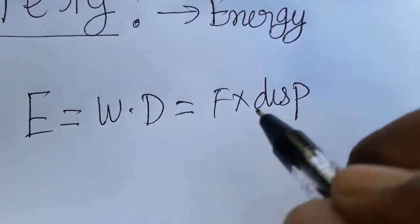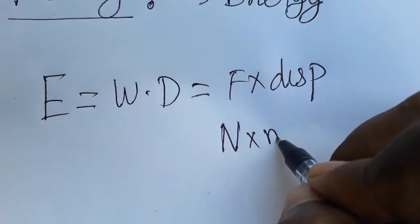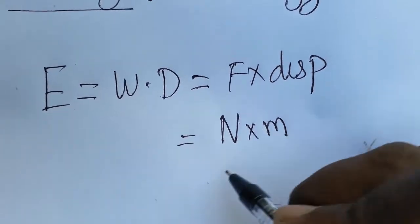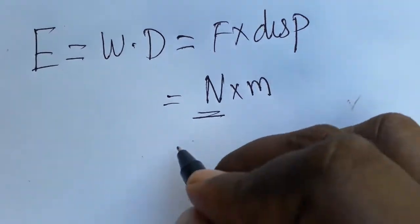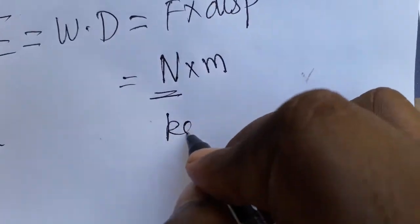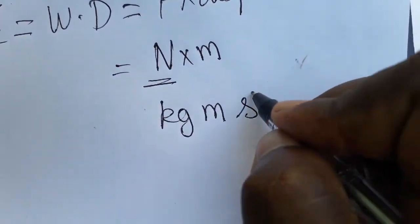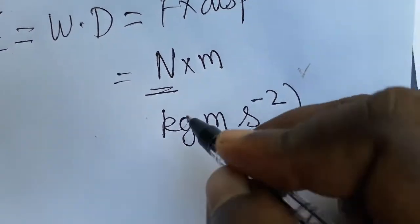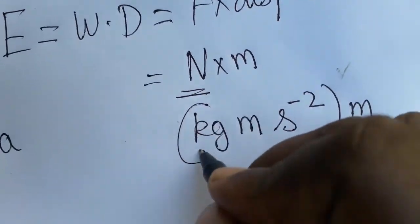Force is measured in newtons and displacement in meters. The unit of energy: newton is mass into acceleration. Force equals m×a, so kg·m·s^-2 into meter.